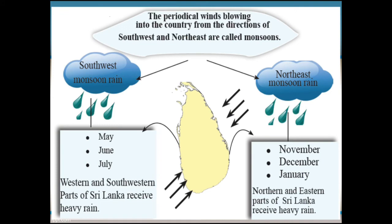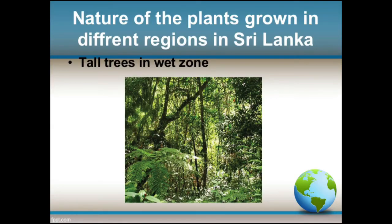This picture shows the two monsoons. The periodical winds blowing into the country from the directions of southwest and northeast are called monsoons. Southwest monsoon rain is received during the months of May, June, and July, and the western and southwestern parts of Sri Lanka receive heavy rain from this. Northeast monsoon rain is received during the months of November, December, and January, and the northern and eastern parts receive heavy rain from it.